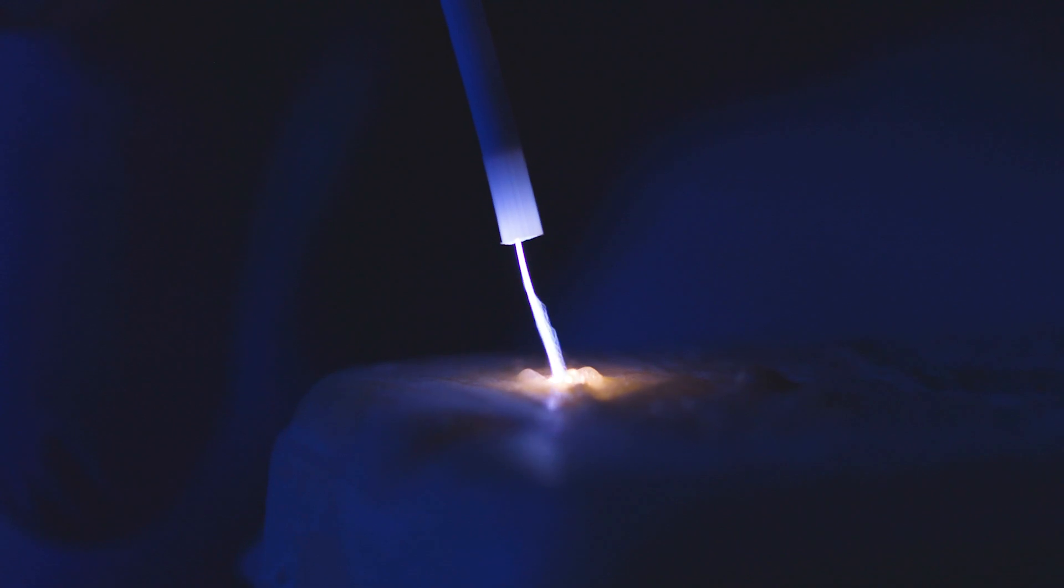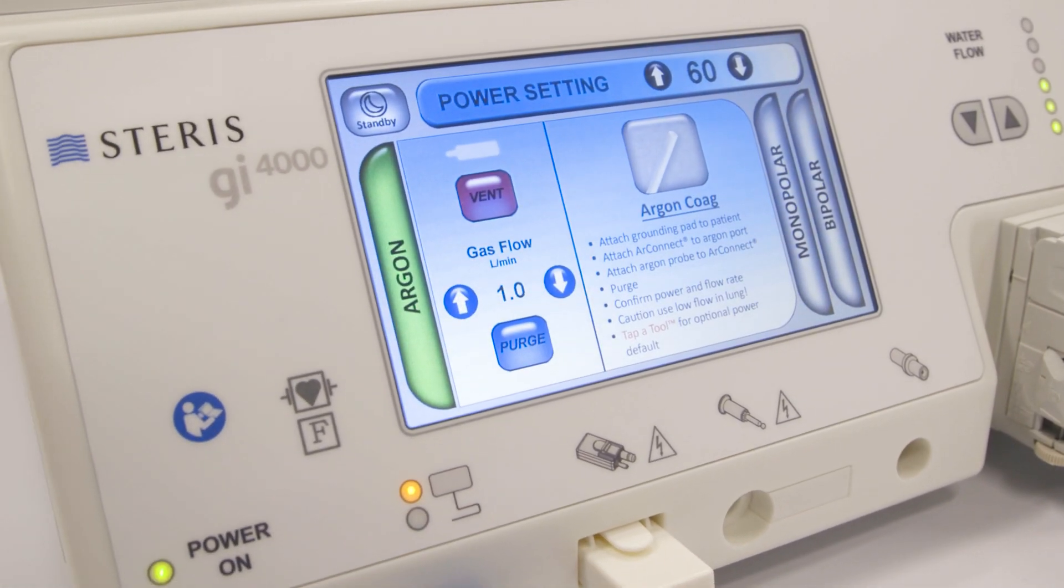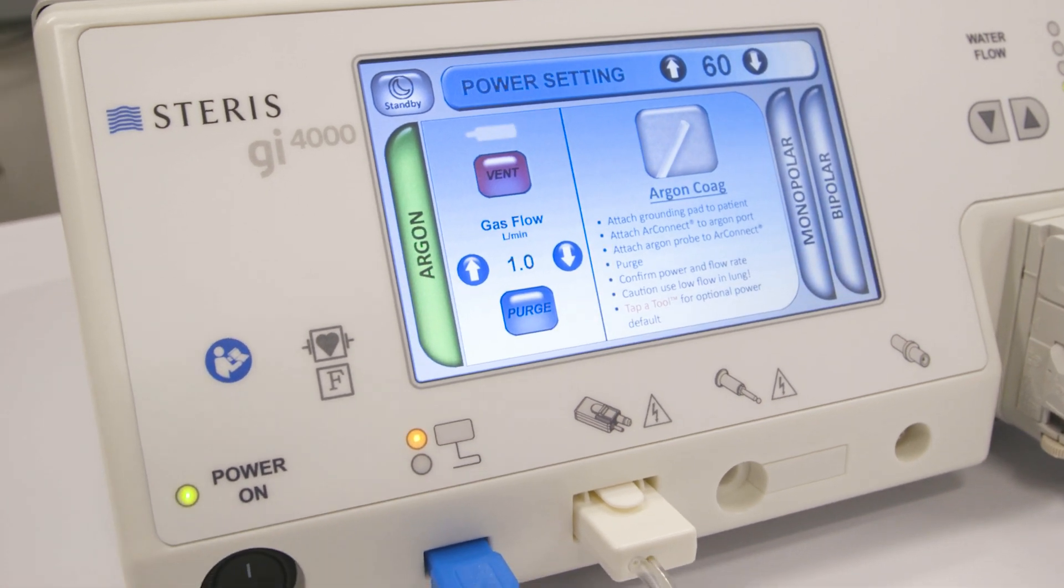If the GI-4000 stays on after the argon method is used, the unit will continue to purge argon gas every 30 seconds until the system is powered off.